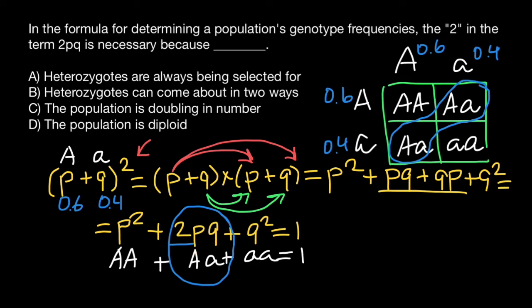So now we can choose the correct answer. And as you see, the correct answer is going to be answer B. Heterozygotes can come about in two ways, P-Q and Q-P, which is the same. This is all for today. Subscribe and see you in the next video.